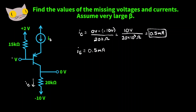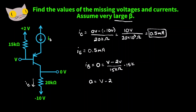Now let's find this voltage. To find it we need our base current, but since we have very large common emitter gain, our base current is just zero. So we set zero equal to the missing voltage minus 2 volts over 15k ohms. Multiplying both sides by 15k gives us zero equals V minus 2 volts, which gives us a value of 2 volts. So we found our collector current, emitter current, and missing voltage.